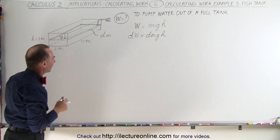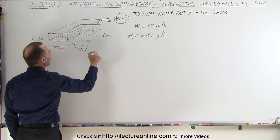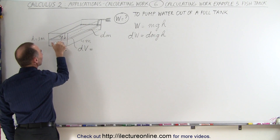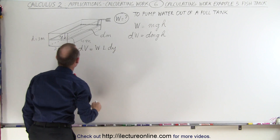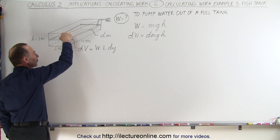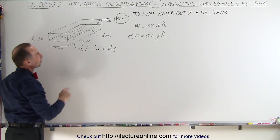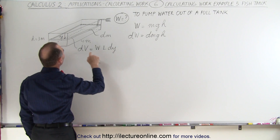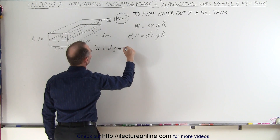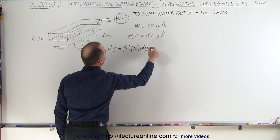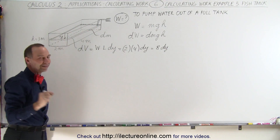Now we have to calculate dm. First, we calculate the volume of that little layer, which is dv. dv is equal to the area — width times length — times the height, which is a very small dy. We're going to call the positive y direction downward, so y equals zero at the top and y equals three meters at the bottom. So dv equals width times length times dy, which is two times four times dy, or 8dy.